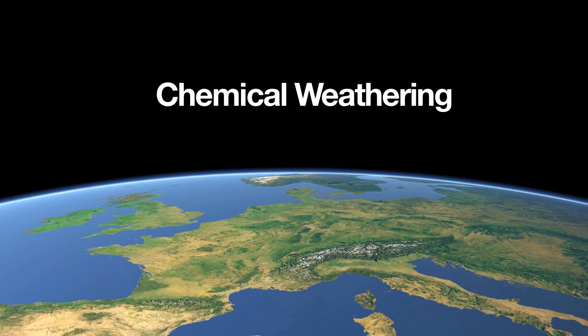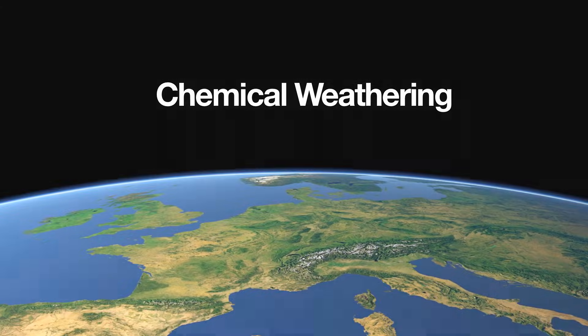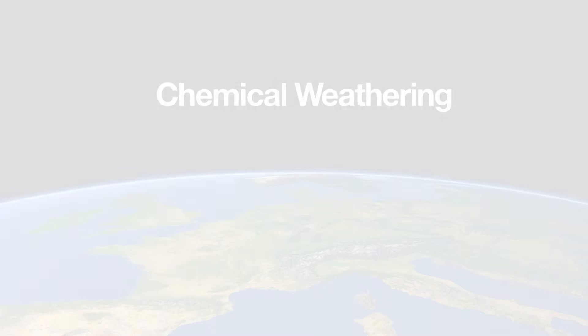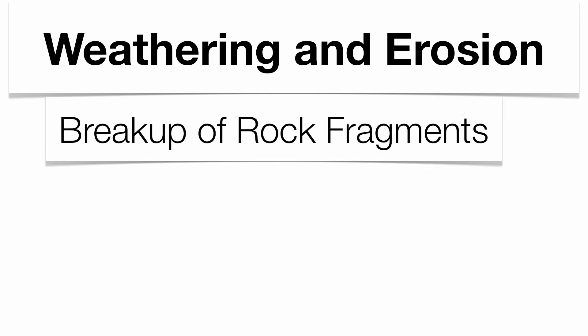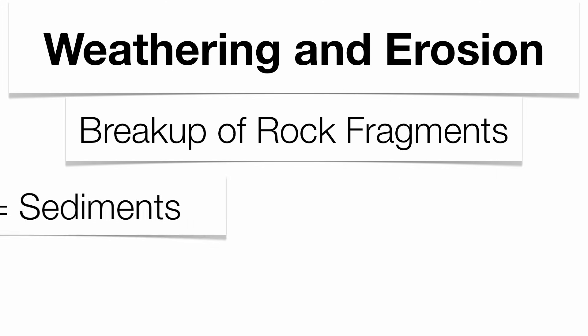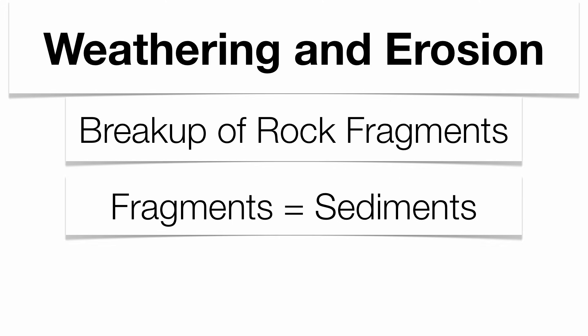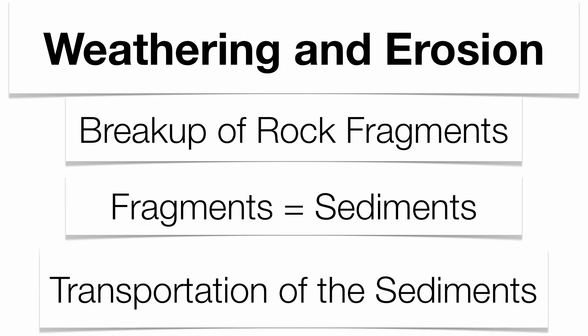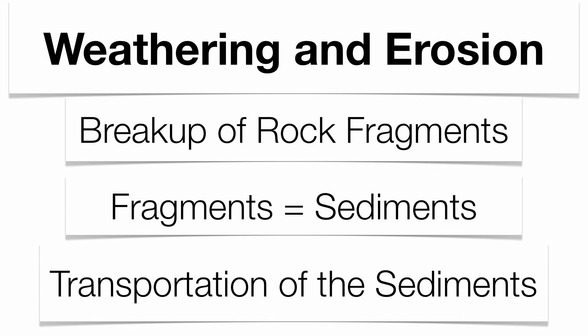In order to understand weathering, you have to have an idea about the difference between weathering and erosion. Weathering is the actual breakup of rock into smaller pieces called fragments or sediments, and sometimes there can also be a chemical change to the composition of the rock. Sometimes those sediments get transported to another location — that's what we call erosion — and that can be done by wind, water, gravity, or glaciers.